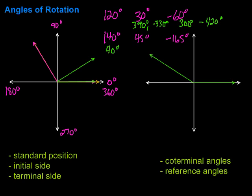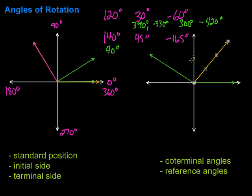For 45 degrees, we have a 45 degree angle. The positive acute angle formed with the x-axis — well, this one is an acute angle itself. So the reference angle is just 45 degrees. If the angle is less than 90, the reference angle is just going to be the angle itself.